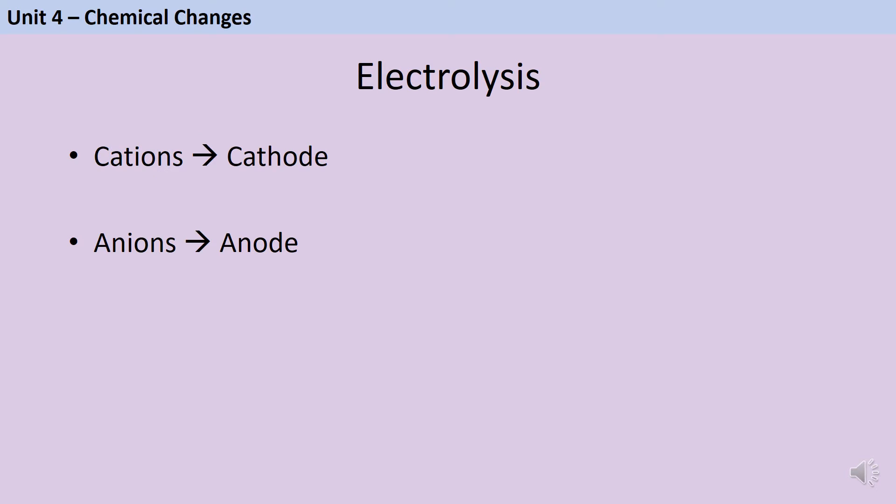These cations and anions move in response to charge towards the electrodes. The electrodes are the inert conducting rods, which are responsible for splitting apart the elements. So the positive cations will move towards the negative cathode, because opposites attract. And likewise, the negative anions will move towards the positive anode, because opposites attract. When they get there, they will be discharged.